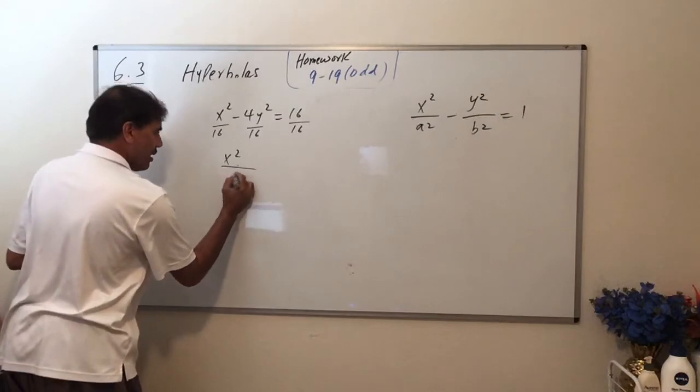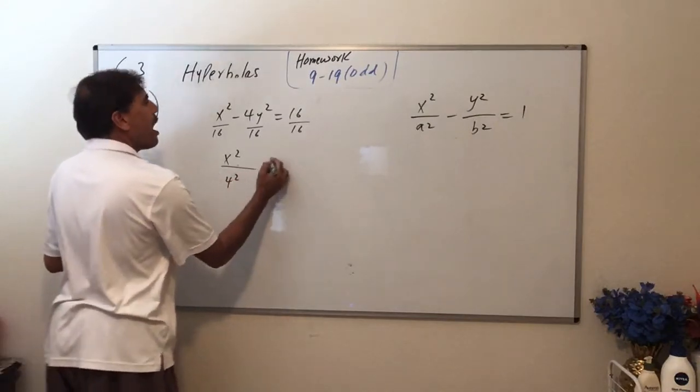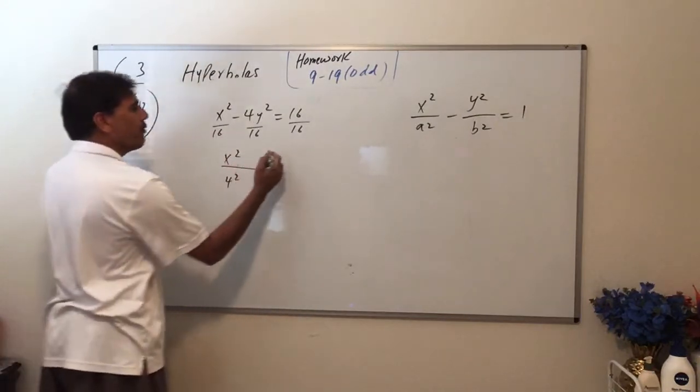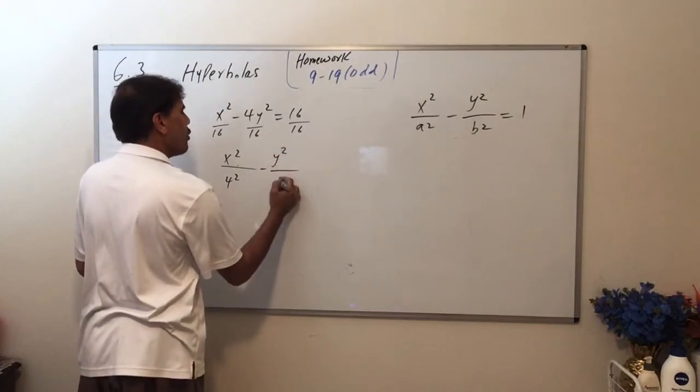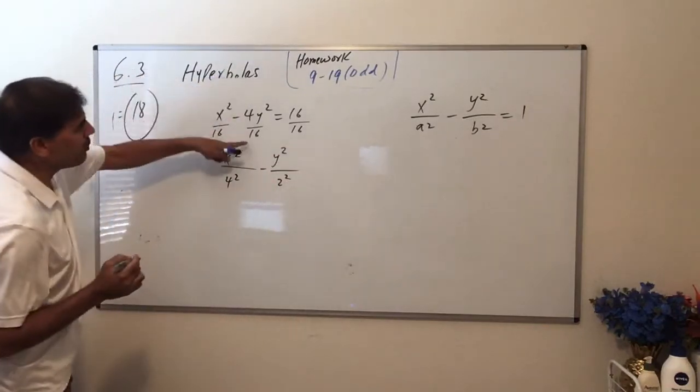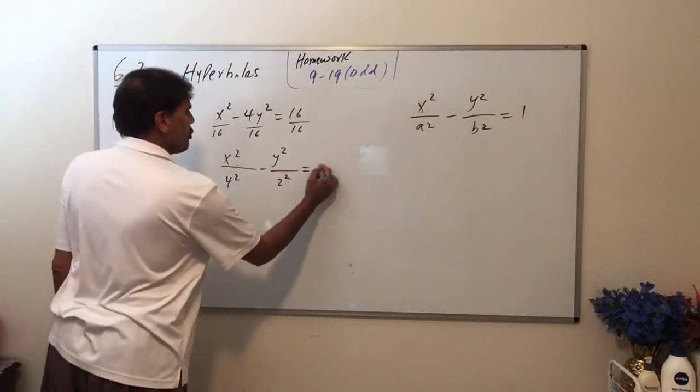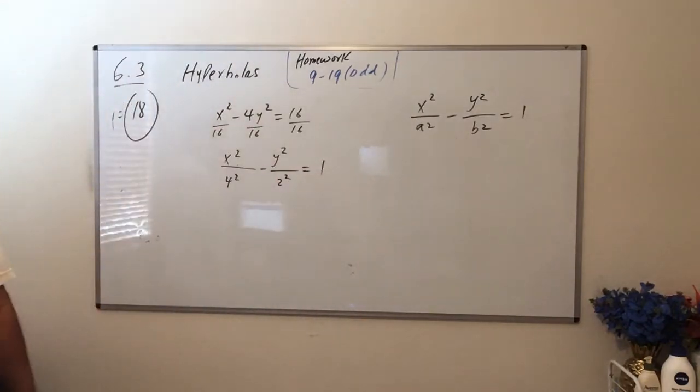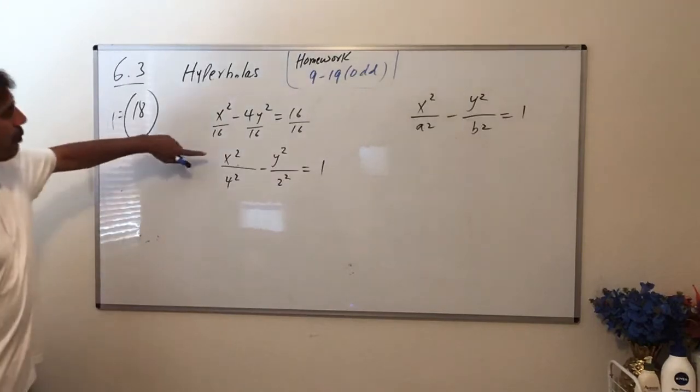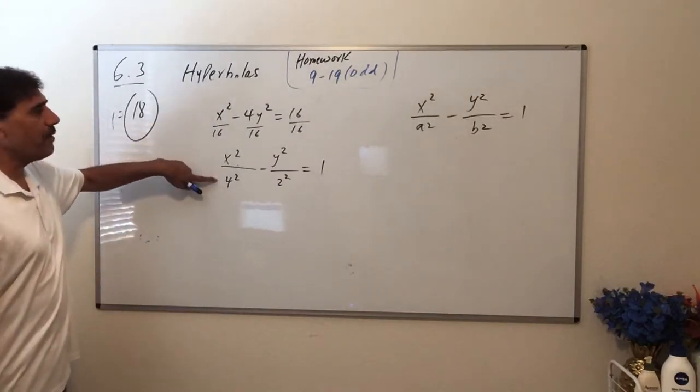And minus 4y² over 16, which is 1 over 4, so then y² over 2². So 4 over 16 is 1 over 4, and 4 is 2 squared. This equals 1—that's your standard format. So now you can tell from here that the x-squared term is positive, so we are expecting your hyperbola's branches are going to open left and right.